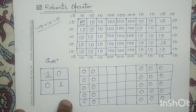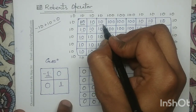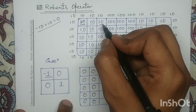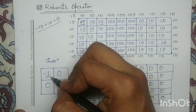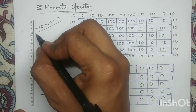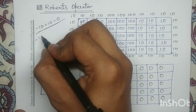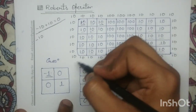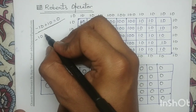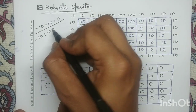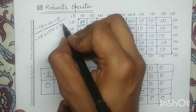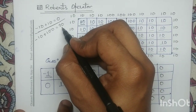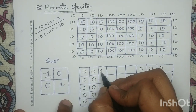Next, we apply the center of this mask at this point. This value 10 will be multiplied with coefficient minus 1, giving minus 10, and this pixel will be multiplied with coefficient 1, giving 100. So minus 10 plus 100 gives the result 90. For this particular pixel, we have determined the response equal to 90.